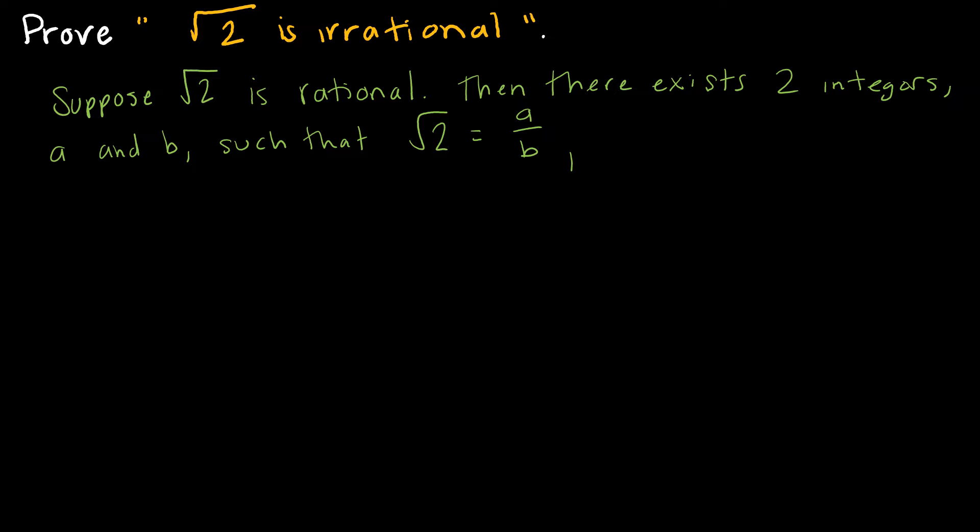I also must conclude that B cannot be 0, because we cannot divide by 0. And this is something in chapter 4 we'll discuss. A and B have no common factors. So that is all of our assumption.